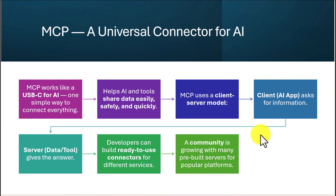The AI app acts like a client — it sends requests asking for data or help. The external tool or server acts like a server — it listens, processes the request, and sends the answer back to the AI. Developers can build connectors using MCP, and these connectors can be reused again and again for different services, saving a lot of time. There is also a growing community where developers share ready-made servers for popular tools.